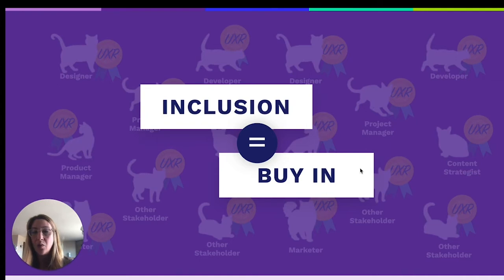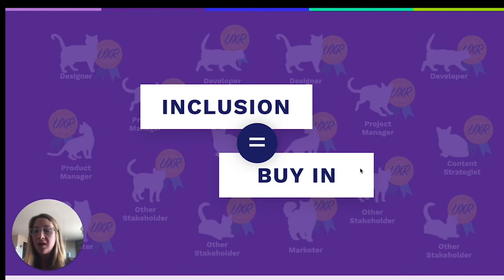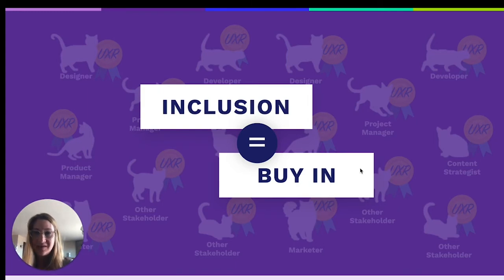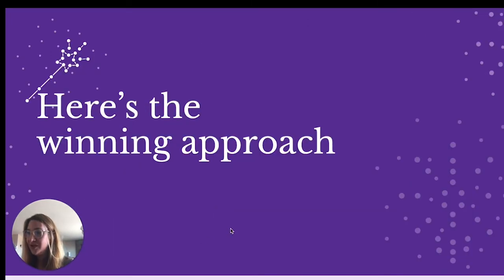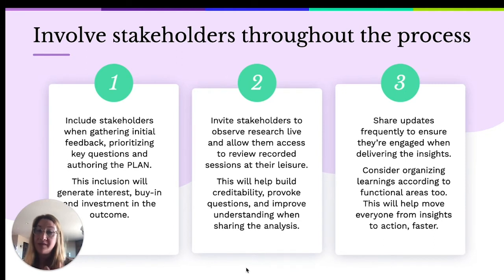People won't buck work that they're a part of. If people see their work in it, they'll be more likely to believe and engage. No one can say you didn't ask the right people the right questions in the right way if they participated. This is my biggest predictor of success in a study: stakeholder engagement in the planning process. If it's their work, they won't regret it. So let's include them from the onset. Here's my approach — what's worked for me over the years. I always include my stakeholders when gathering initial feedback, prioritizing key questions, and authoring the plan. That inclusion generates interest, buy-in, and investment in the outcome.